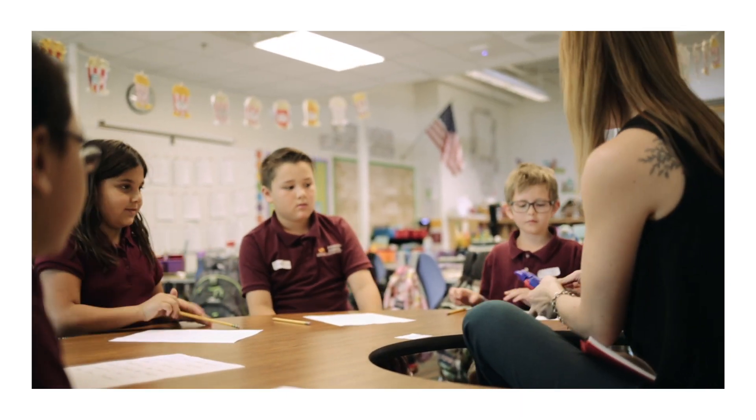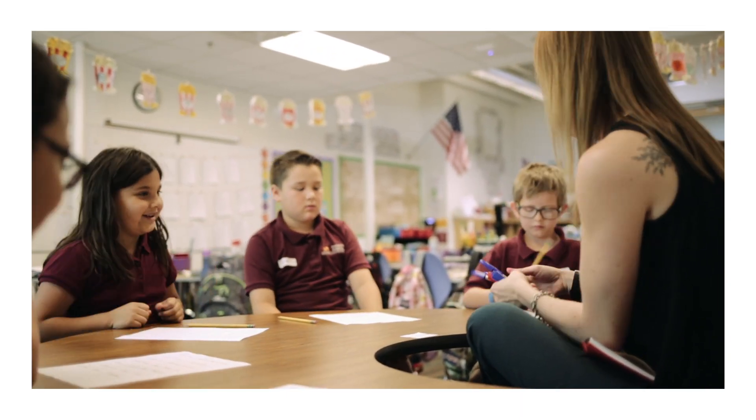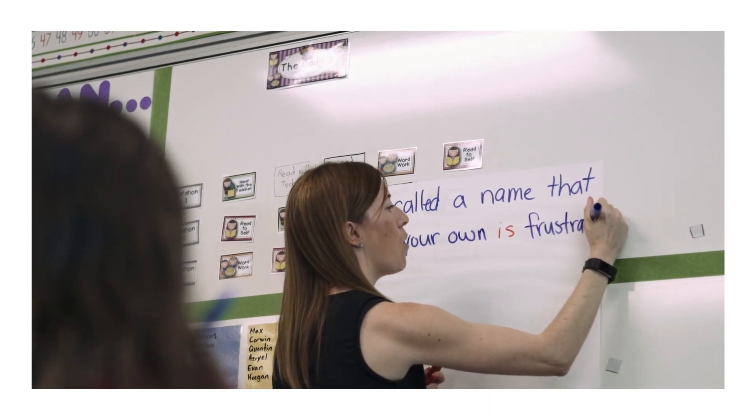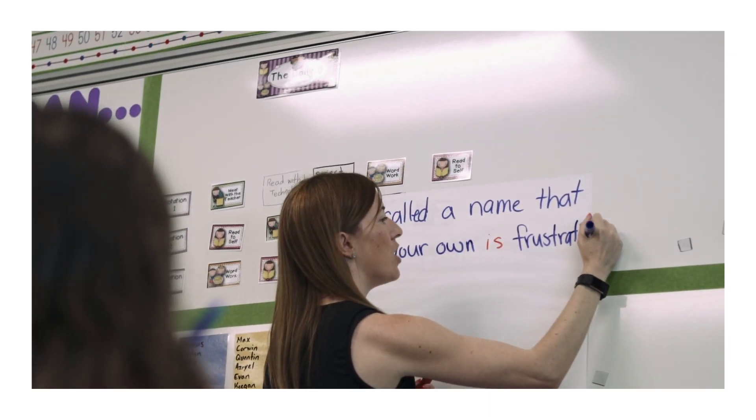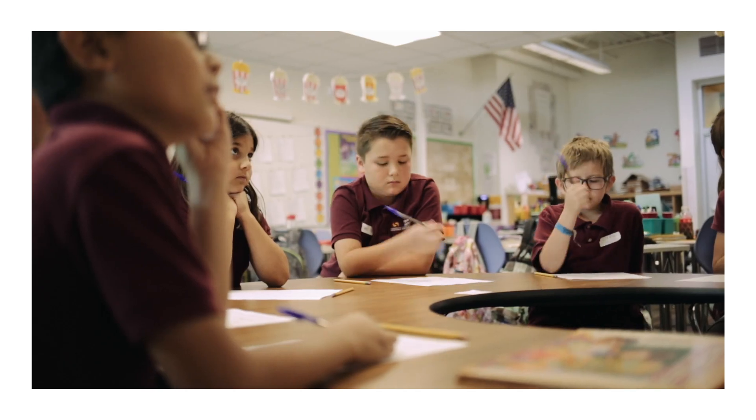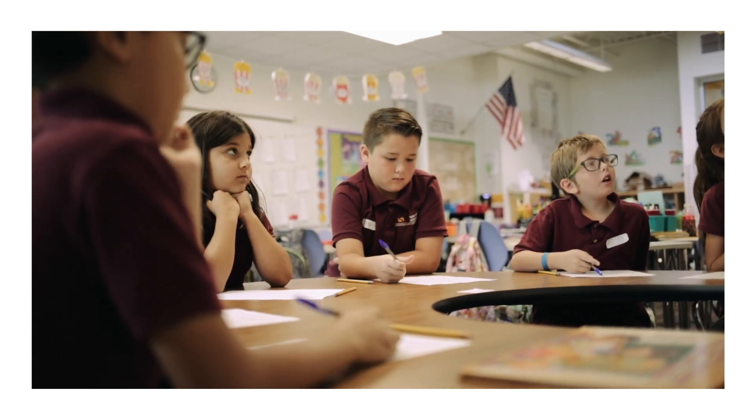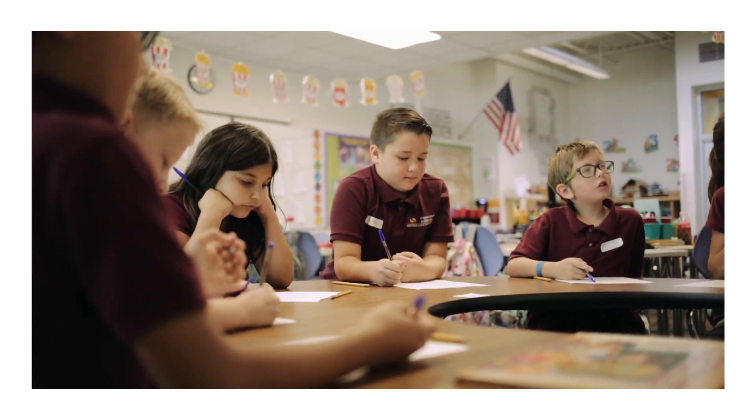Once all of the chunks have been read and the students have written the entire passage, students are given pens. As a teacher, I go through each sentence — I write it on the board, and once the students have corrected mistakes, we do a think-aloud. 'Before I talk about this sentence, I want you to look at just this sentence up to the period at the end, and fix any mistakes that you made.'